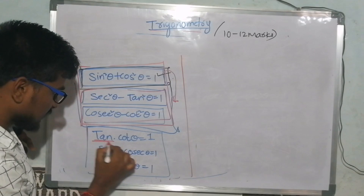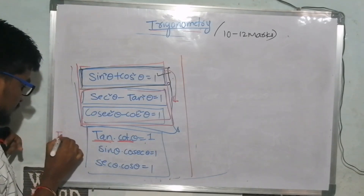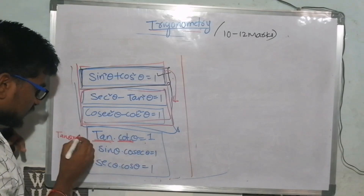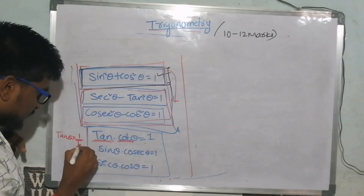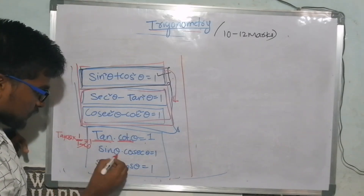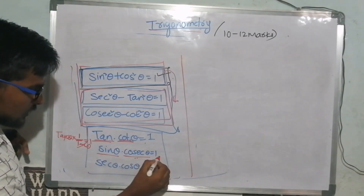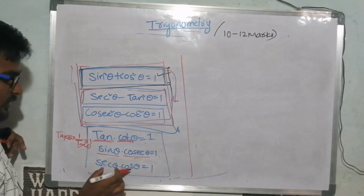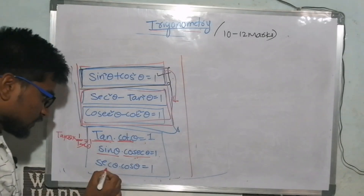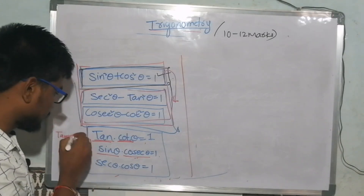tan θ · cot θ = 1 — this is tan θ into cot θ, which equals 1 divided by tan θ. Second: cosec θ is 1 by sin θ, and sec θ · cos θ gives 1. Second: sec θ is 1 by cos θ, and cos θ gives 1 in return.